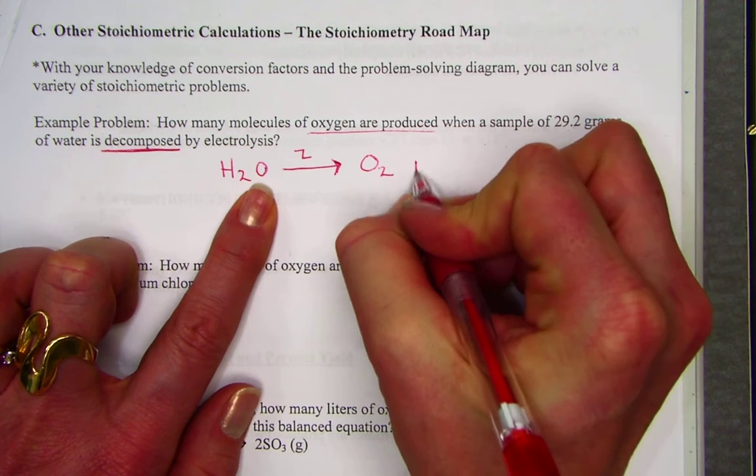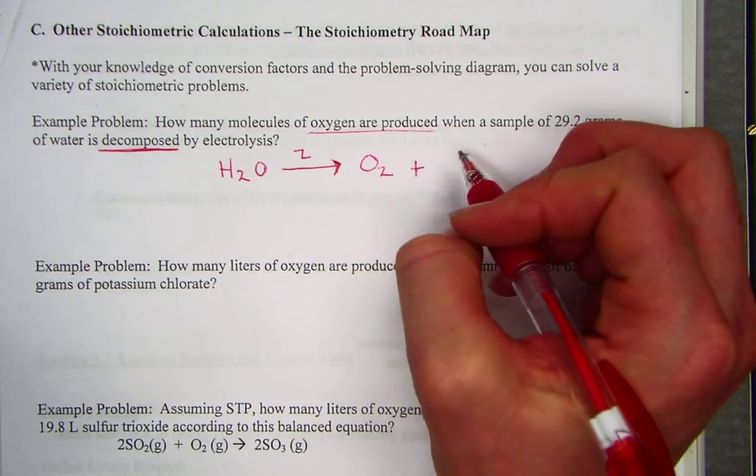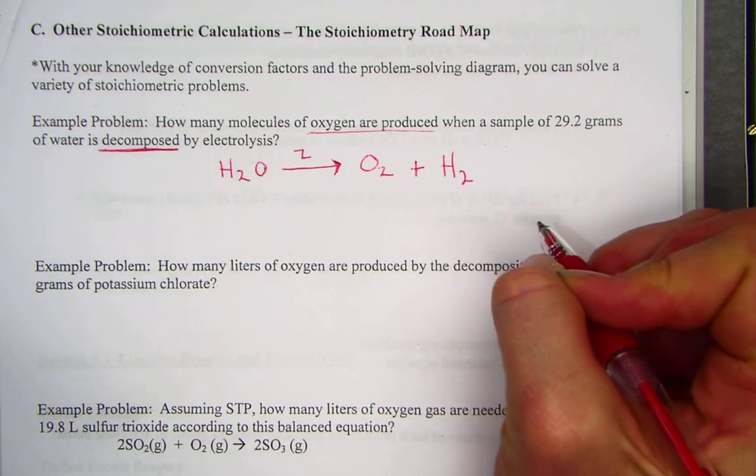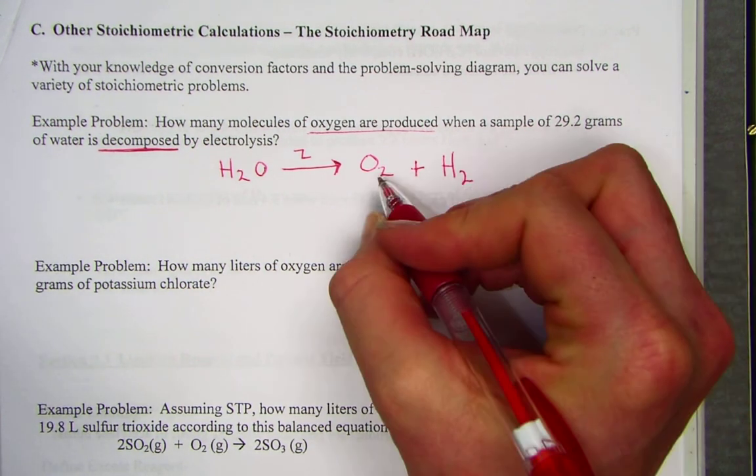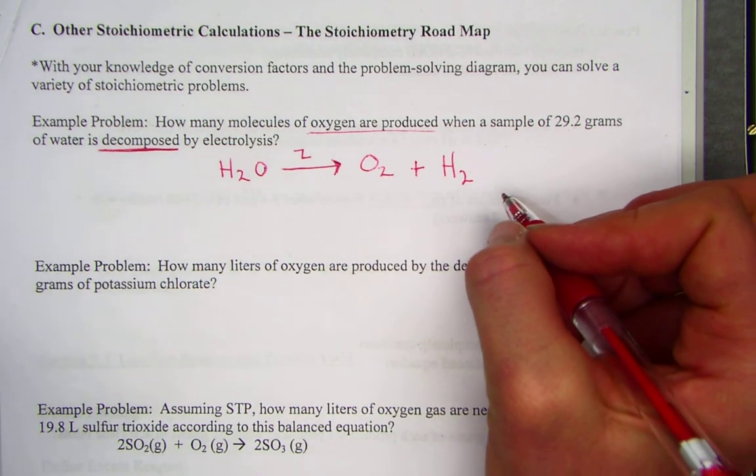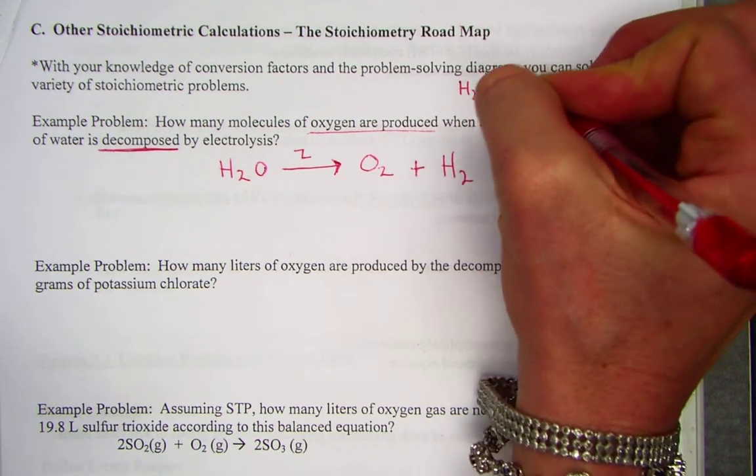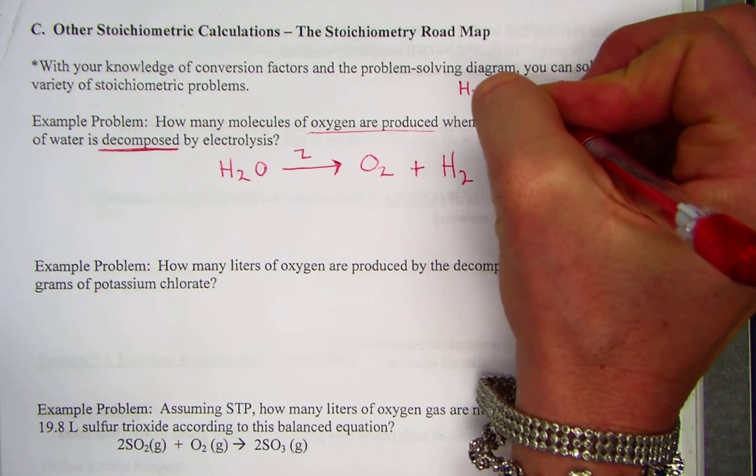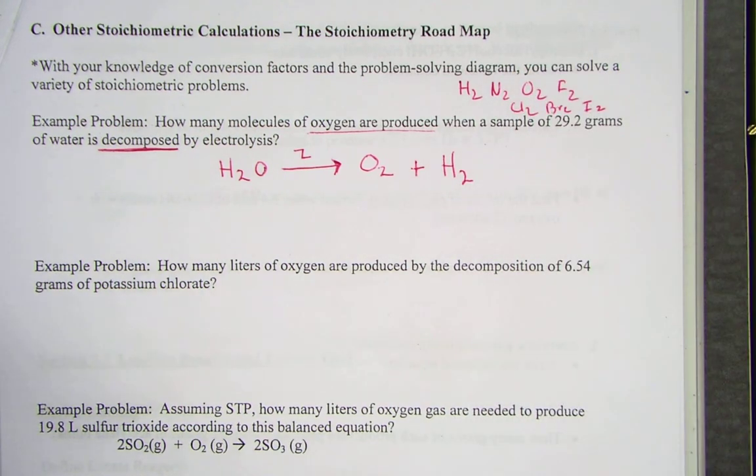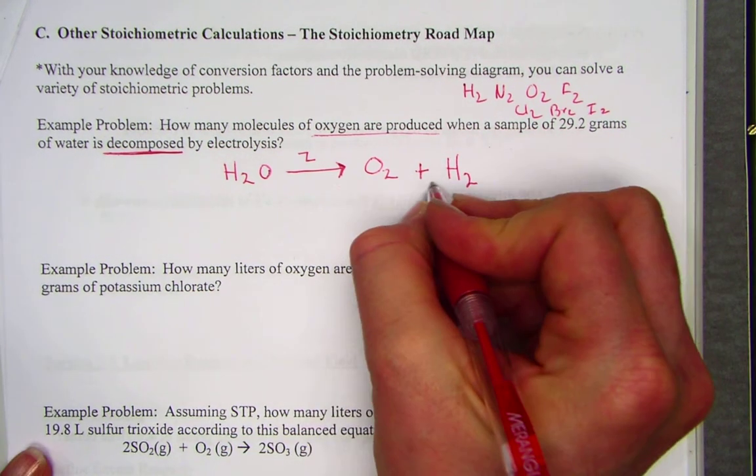And it told us as part of the story problem that oxygen was produced. The other element must be hydrogen. When H's and O's are written, we know that they are diatomic. Remember our sentence: Horses need oats for clear brown eyes. Those are the seven naturally occurring diatomic molecules of which O's and H's do indeed belong to that club.